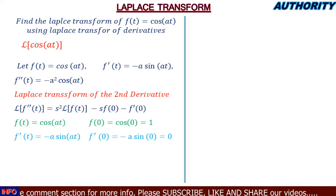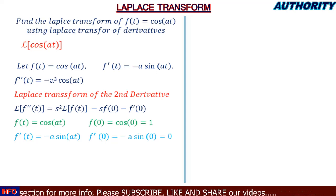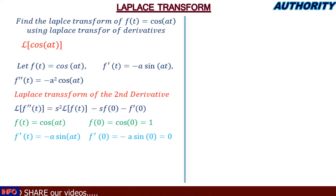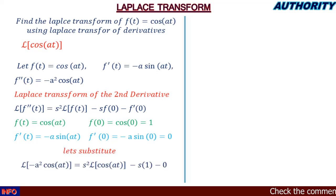Having found these values, let's substitute into equation one. In equation one we have the Laplace transform of f''(t). We found that the second derivative is −a²·cos(at), so we substitute: the Laplace transform of −a²·cos(at) equals s²·L{cos(at)} minus s·f(0) minus f'(0).